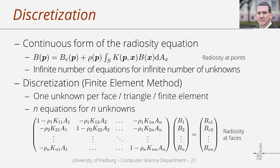If we now consider one radiosity equation per patch, then we get n radiosity equations for n unknown radiosity values. The resulting linear system is shown here, and in the following I am going to discuss how to get from the continuous form of the radiosity equation to this system.